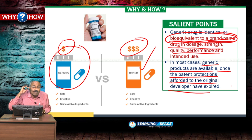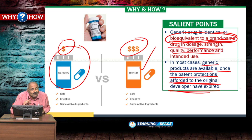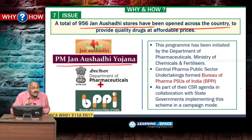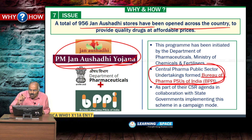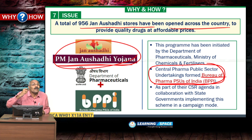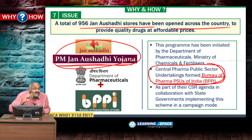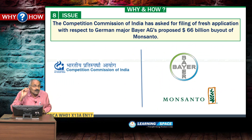To promote generic medicines, the PM Jan Aushadhi Yojana is intended, undertaken by the Bureau of Pharma PSUs of India in collaboration with state governments. It provides generic medicines at affordable costs to the general public.